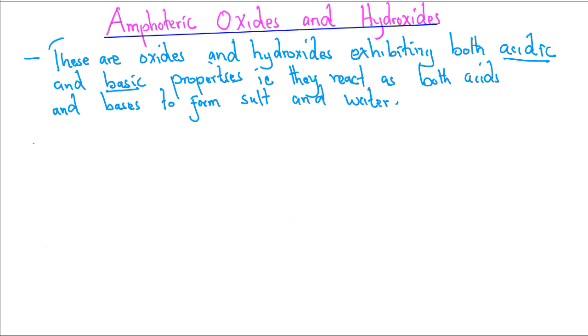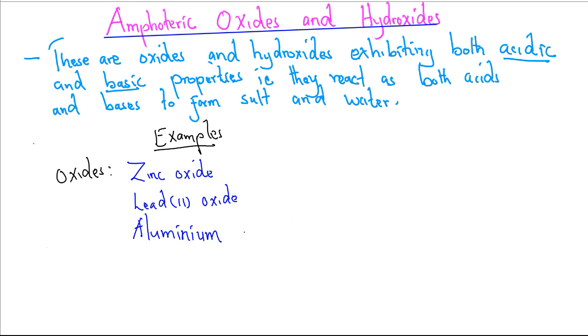Let's look at examples of amphoteric oxides and hydroxides. To start with, the oxides include zinc oxide, lead(II) oxide, and finally aluminum oxide. That is Al2O3, PbO, and ZnO.